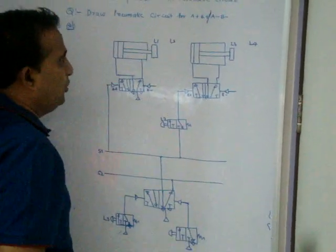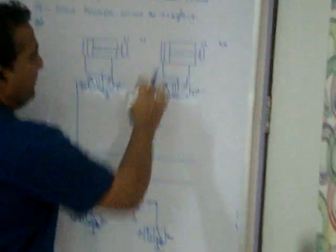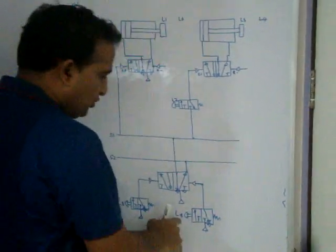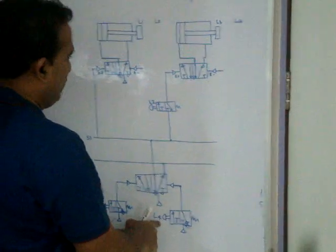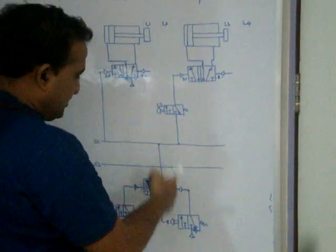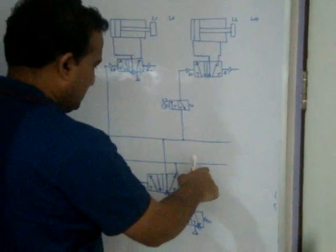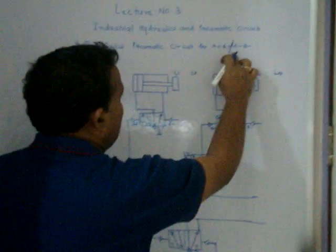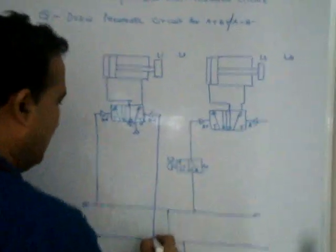In Group 2, A minus is required. The recent position of the piston is B plus, which means it is at L4. You take L4 as the reference. Check: have you used L4? No — L2 and L3 were used, but not L4. Now when L4 is on, supply S2 is activated, meaning A minus happens. A minus means the piston returns to L1.